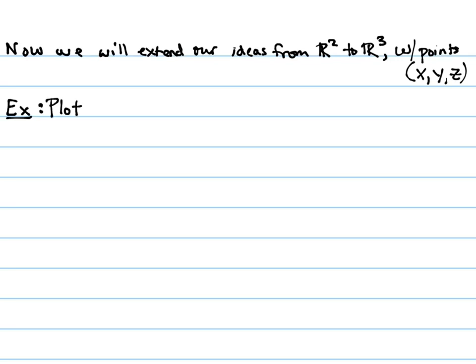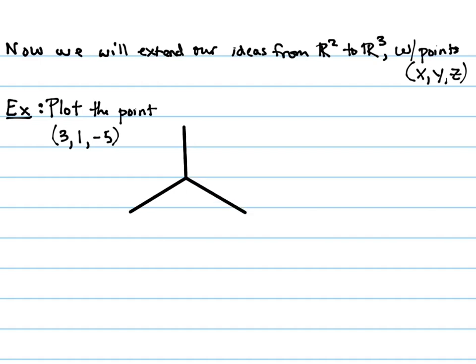We won't do very many of these — they're not especially pretty to plot — but we'll have a couple of them in your homework. We're going to plot the point 3, 1, negative 5. So a bit of background if you haven't done any three-dimensional plotting, or maybe just haven't in a while: our Z axis is the top axis.